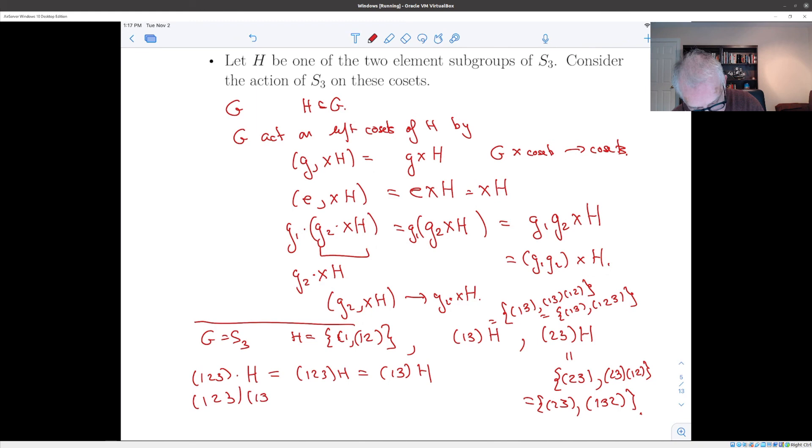So (1, 2, 3)H contains (1, 2, 3). So this is going to contain (1, 2, 3) times (1, 2), which is (1, 3, 2). So this is going to be (2, 3)H.